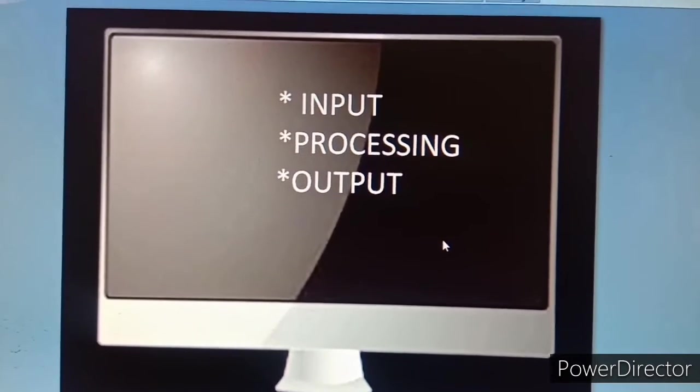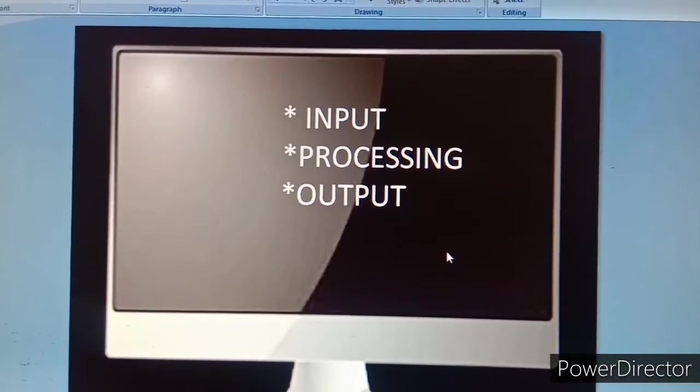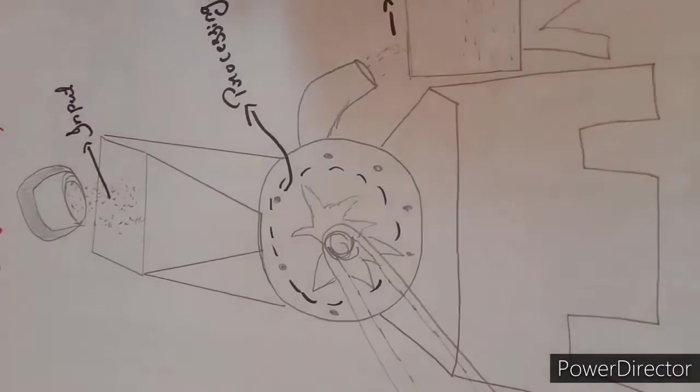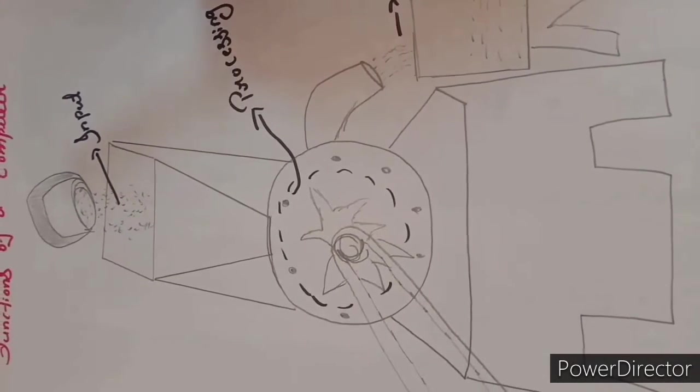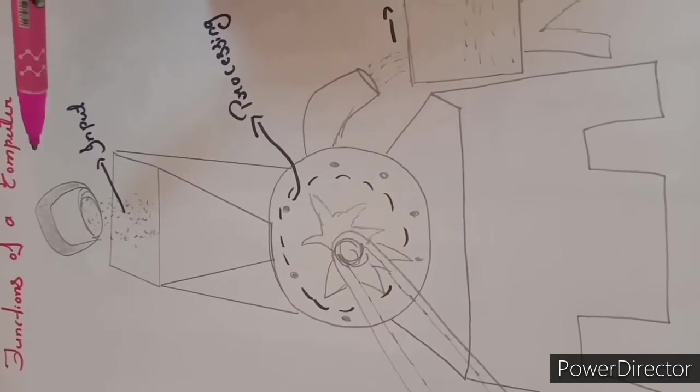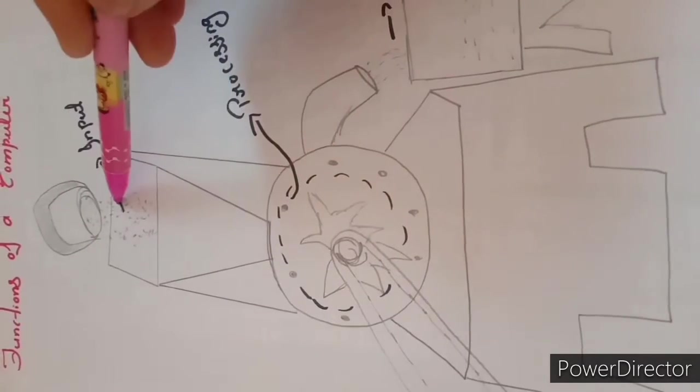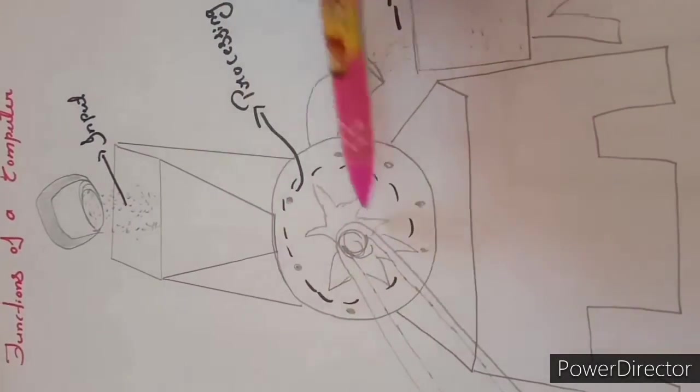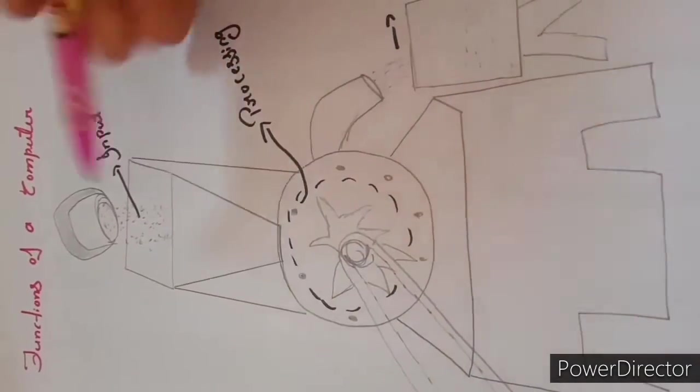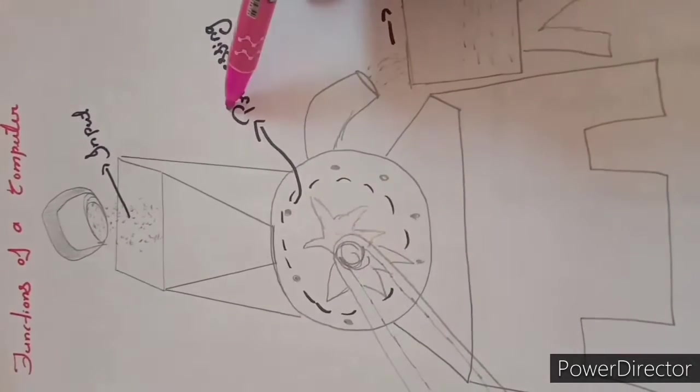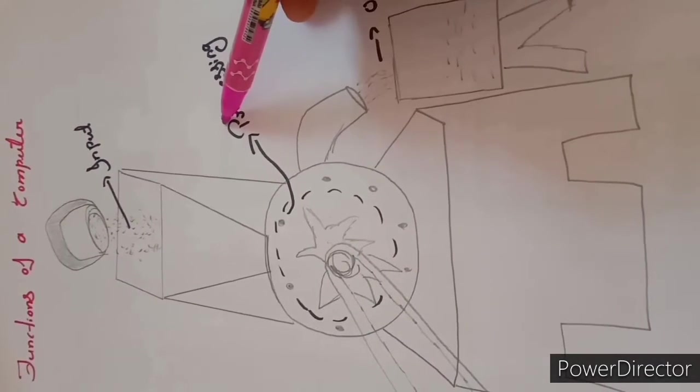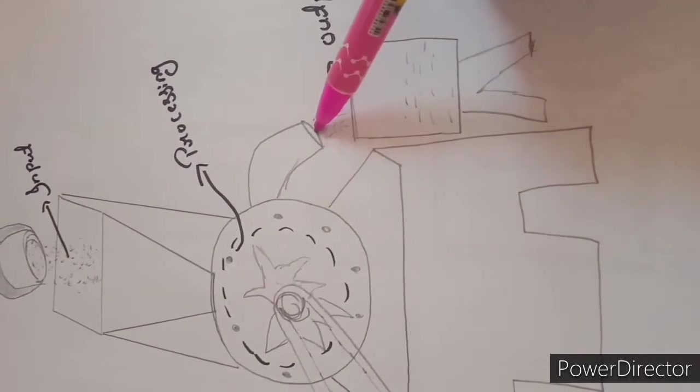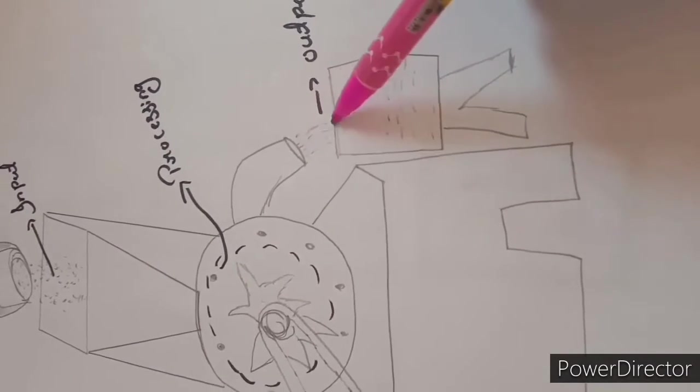Let us take the examples of a flour mill. In a flour mill, Food grains are put into the big funnel at the top. And they are slowly crushed in the grinder. This part is grinder. So This one is input. This is processing. The flour comes out of the opening at the bottom. This is output.